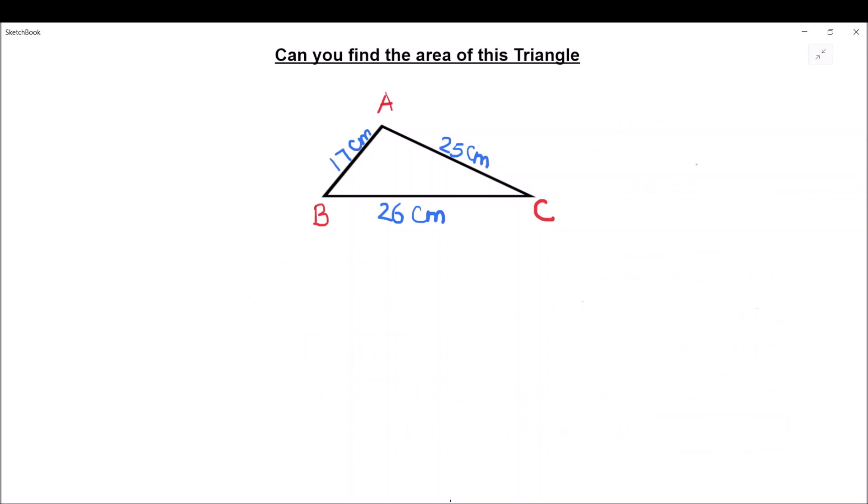For finding the area of this triangle we are going to use the formula which is also called Heron's formula because it was developed by mathematician Heron. The formula is square root of s times (s minus a) times (s minus b) times (s minus c).